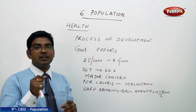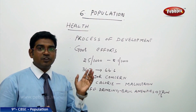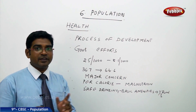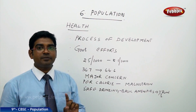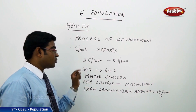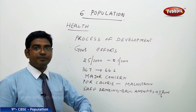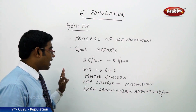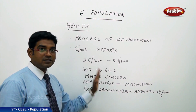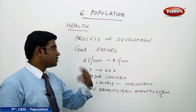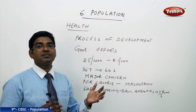Government efforts have been very sincere, and the sustained efforts have proved very effective. Looking at the statistics, death rates which were earlier 25 per thousand have fallen down to 8.1 per thousand. Life expectancy increased from 36.7 in 1951 to 64.6 — a tremendous achievement.